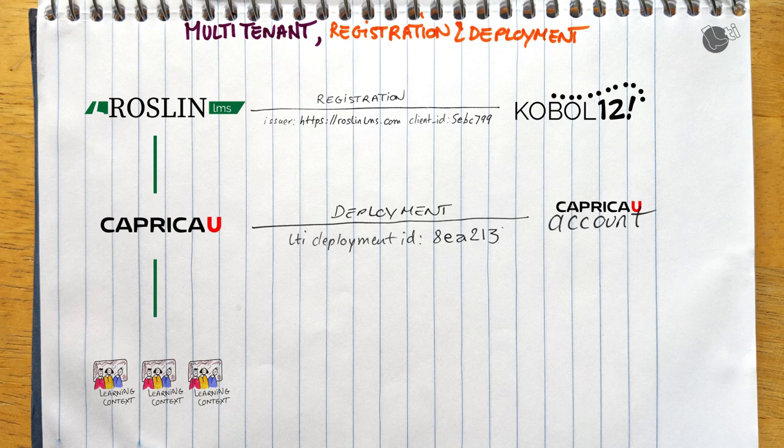That was an example of a multi-tenant scenario. What about single-tenant? Single-tenant is just a special case of multi-tenant where a tool will only have a single deployment for a given issuer and client ID — that is, a single deployment for a given registration. This happens, for example, when the registration is done at the organization level, not at the learning platform level. This will also be the de facto case for organizations managing their own LMSs or standalone versions of LMSs.